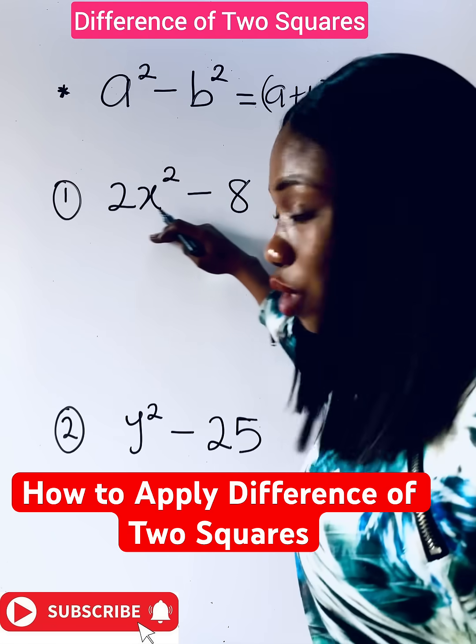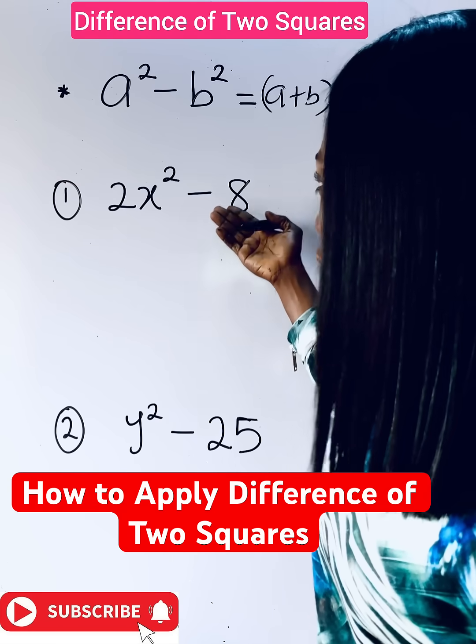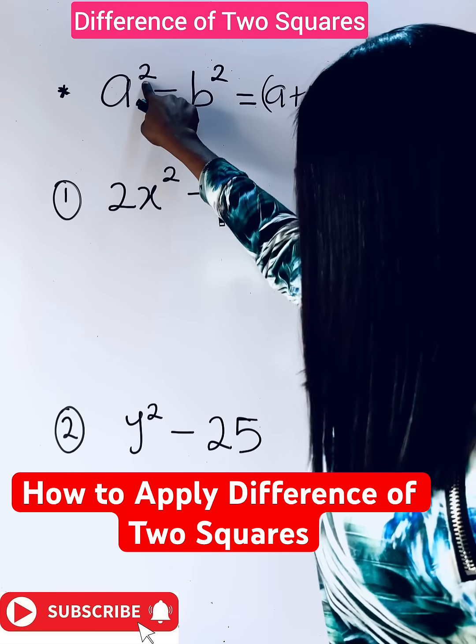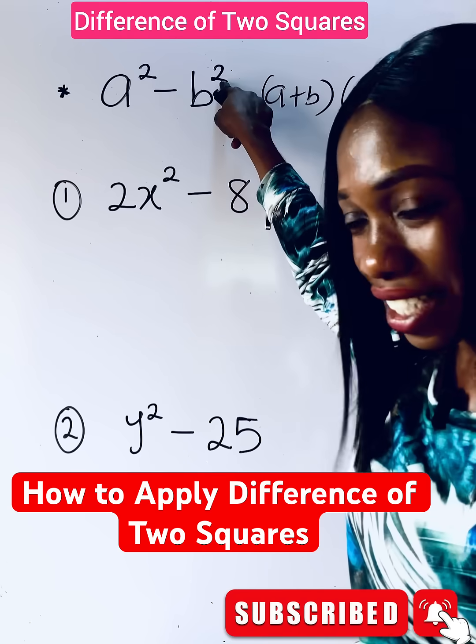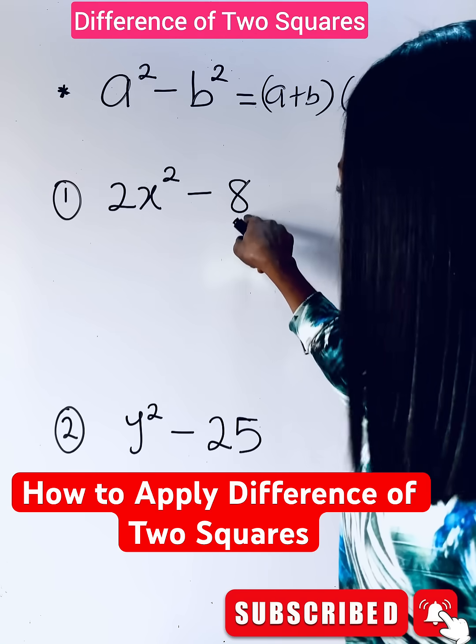Now, let me teach you how to apply it here. But can we apply it here? For you to apply it, this number must be squared and this must be squared. But when you look at this, this is not squared.